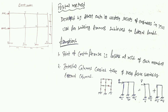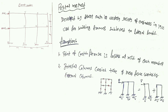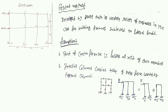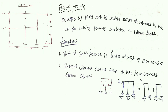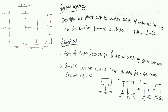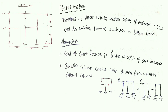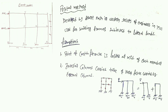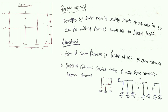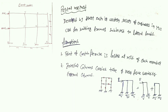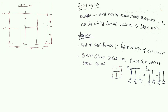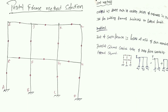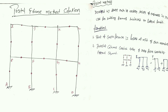Since this is an approximate analysis method, we have some assumptions. First, the point of contra-flexure is located at the midpoint of each member, meaning all beams and columns are assumed to have their point of contra-flexure at mid-length. Second, the internal columns of the frame carry twice the shear carried by the external columns — if external columns carry shear V, internal columns carry 2V. Every dot in the frame diagram represents a point of contra-flexure.